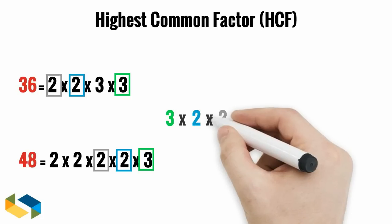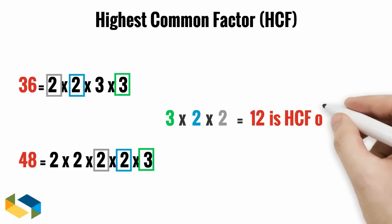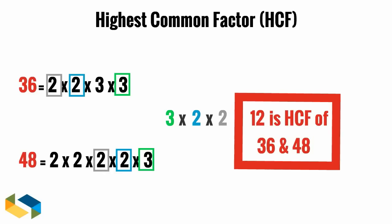Multiply these and we get the HCF of 36 and 48 which is 12. Simple isn't it?